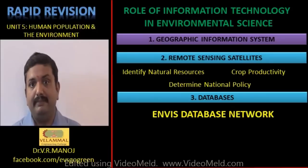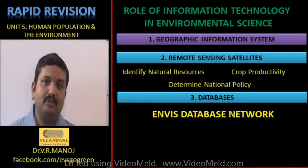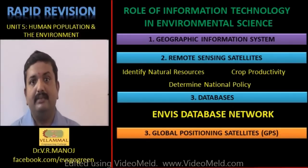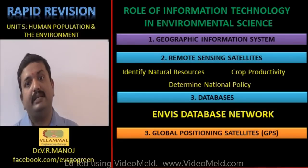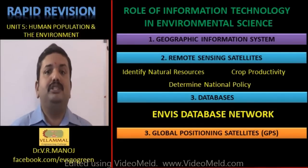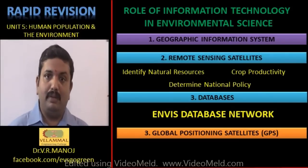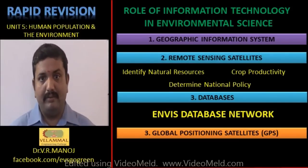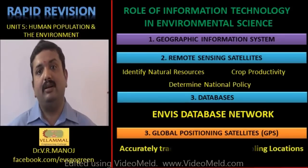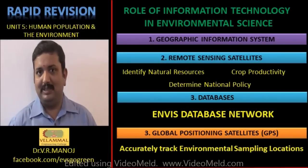You must also mention different kinds of databases available, particularly the ENVIS database — a repository of environmental information available in libraries throughout the nation. Additionally, Global Positioning Satellites form a network of satellites orbiting the earth that can accurately find the position of any given area, which is very important for identifying areas of environmental interest and for collecting samples during environmental studies.